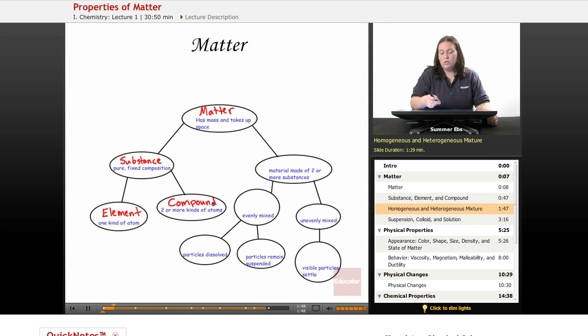On the other hand, when you have material made up of two or more substances, now there's that word substances. So we're looking at material made up of two or more elements or compounds because that's what a substance is. So that kind of material is called a mixture.